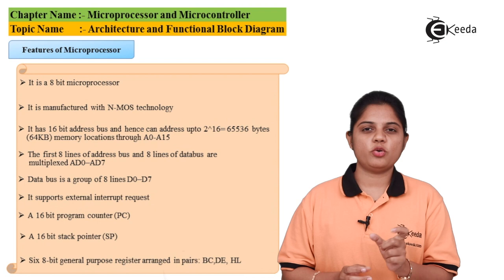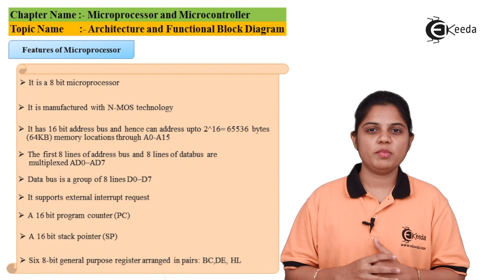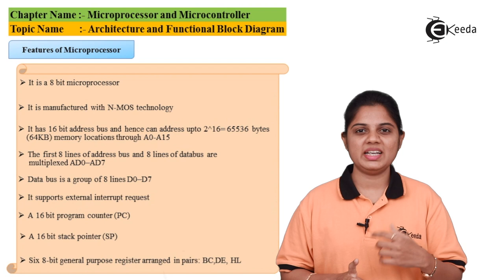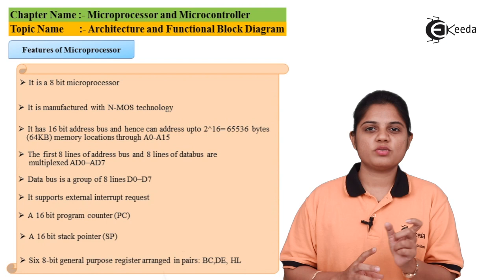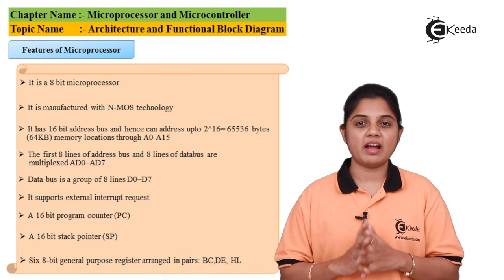AD0 to AD7 are dedicated for the data bus. Eight lines of data bus and eight lines of address bus are multiplexed together. The address bus provides 16 bits. The 8085 microprocessor has a 16-bit address bus, which means it can provide 2 raised to 16 memory locations — that is 65,536 — which is 64 kilobytes of memory locations available to store data.